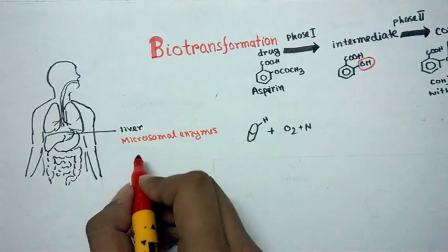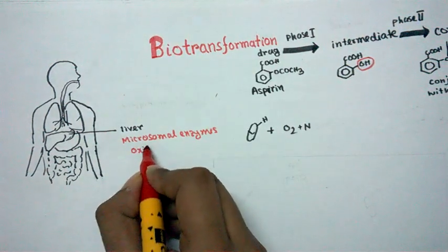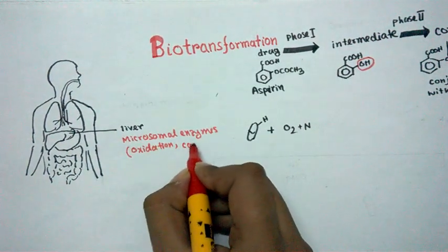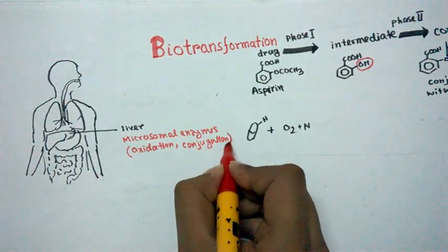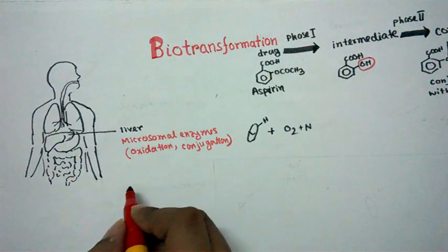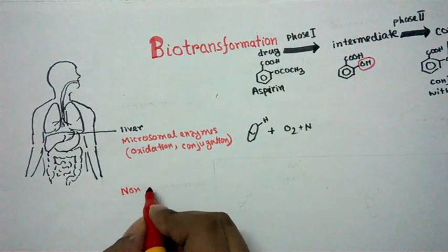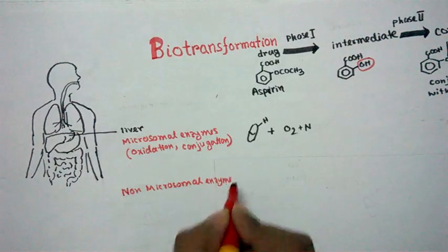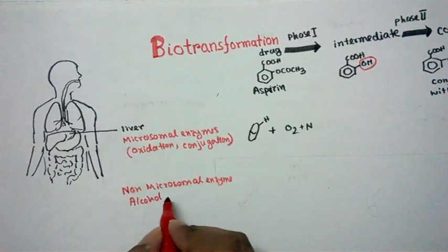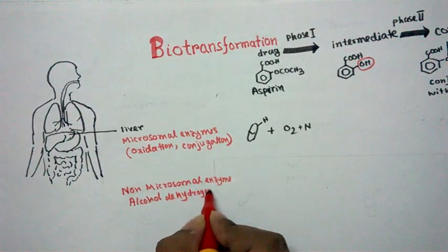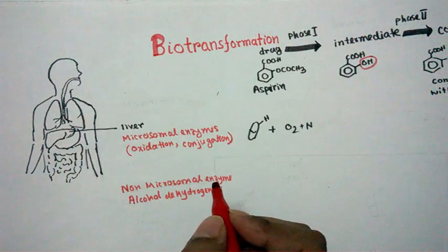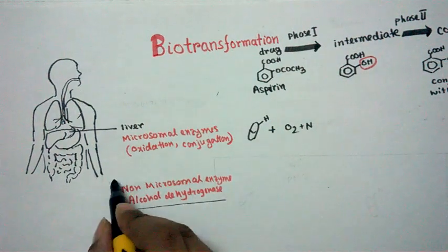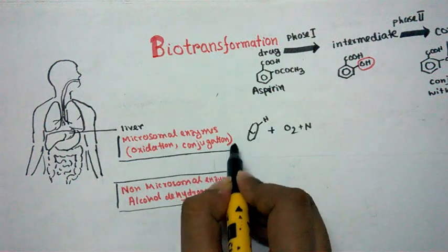Microsomal enzymes carry out two types of reactions: the first step is an oxidation-type reaction, also called a redox reaction, and the second step is a conjugation reaction. In the liver we also have non-microsomal enzymes, such as alcohol dehydrogenase, which oxidizes ethanol into acetaldehyde. These are the two basic enzyme systems in the liver that can detoxify and biotransform drugs.